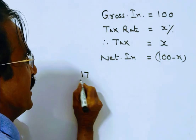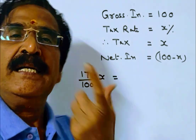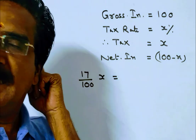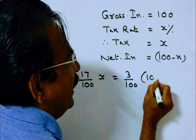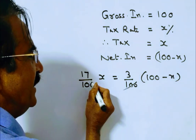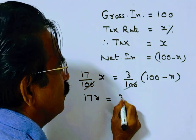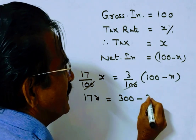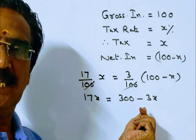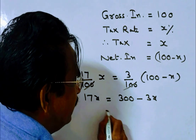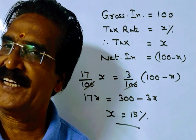So 17 percent of x is equal to 3 percent of (100 minus x), giving us 17x = 300 minus 3x. This implies 20x = 300, therefore x = 15 percent. So x is equal to 15 percent — that is our answer. Thank you.